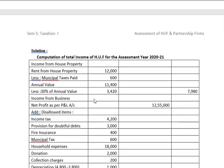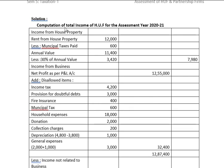Now let us see how to compute the total income of HUF. Here we have combined all the five heads of income. Computation of total income: first, income from house property. Rent from house property is Rs. 12,000. Less municipal taxes paid Rs. 600. So annual value will be Rs. 11,400. Less 30% of annual value, 30% of Rs. 11,400 comes to Rs. 3,420. So the income from house property is Rs. 7,980.